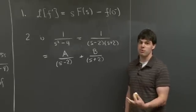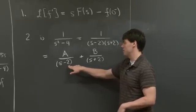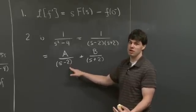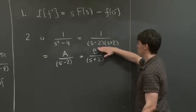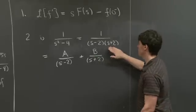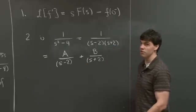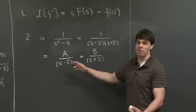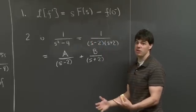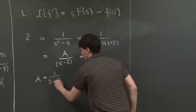One way to solve for a and b is to multiply both sides through by the factors s minus 2 and s plus 2, then plug in values of s. There's another way, sometimes referred to as the cover-up method. We pick one of the places where the denominator blows up — for example, s minus 2 diverges when s approaches 2. We go back to the original function, cover up the term s minus 2, and plug in s equals 2 into the remaining term. This gives us a equals 1 over 2 plus 2, which is 1 over 4.